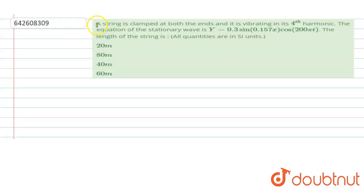Hello, the problem states that the string is clamped at both the ends and it is vibrating in its fourth harmonic. The equation of the stationary waveform is given by y = 0.3 sin(0.157x) cos(200πt). We have to find the length of the string formed and all quantities are in SI units.